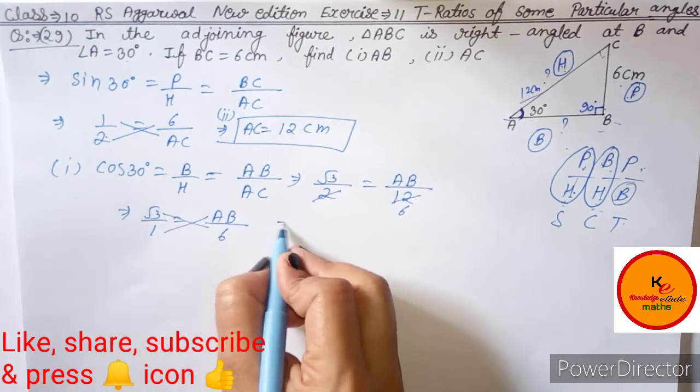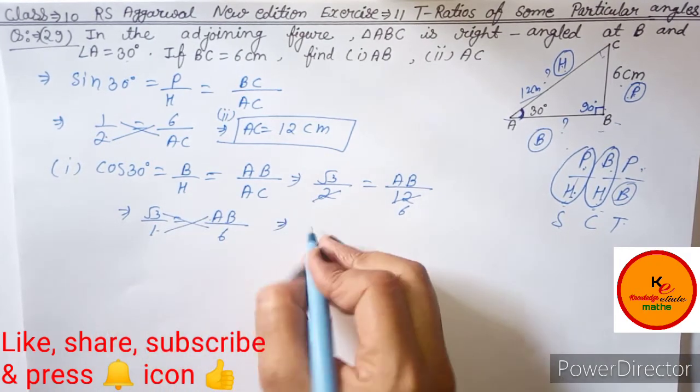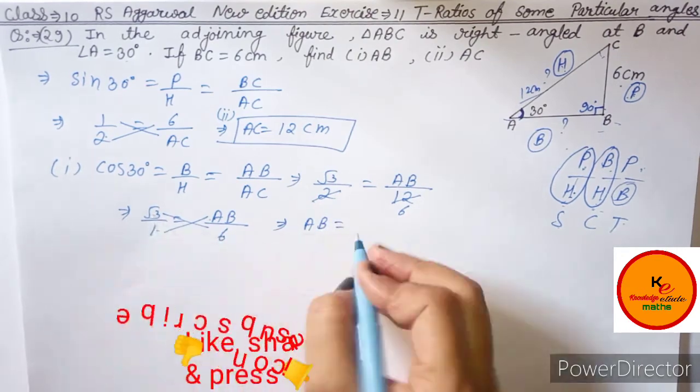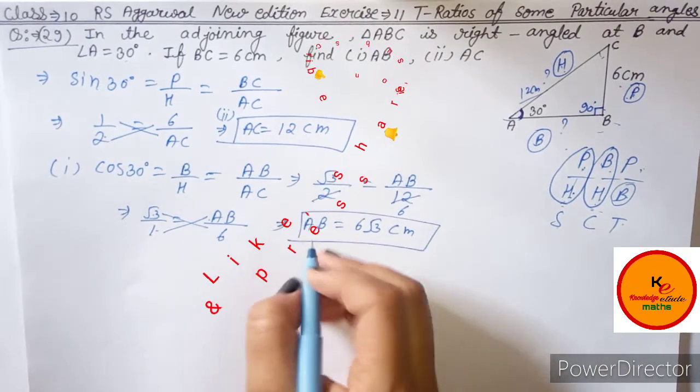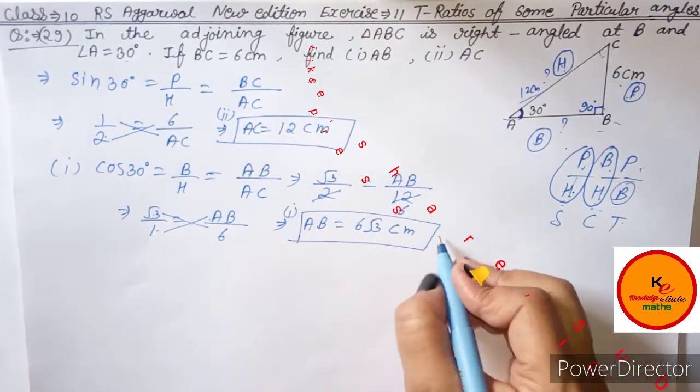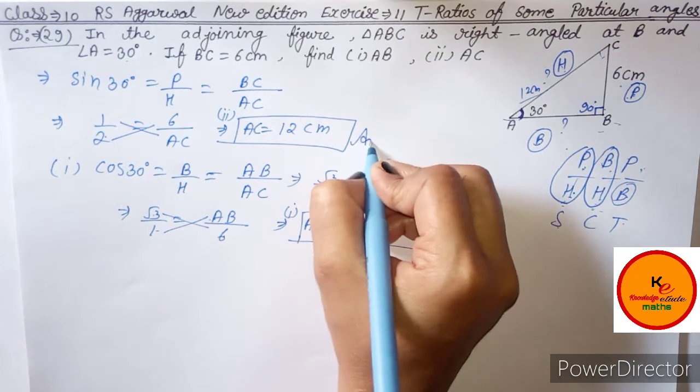AB equals 12 divided by root 3, which is 6 root 3 cm. So you will find part number 1. Now these are your answers.